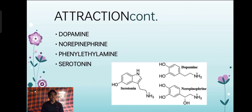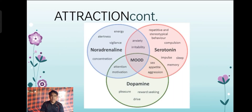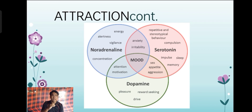The attraction encompasses brain chemicals called monoamines: dopamine, norepinephrine, phenylethylamine, and serotonin — contributors of attraction. There is a Venn diagram in our slides about these brain chemicals and attraction. When we talk about mood, there is noradrenaline, serotonin, and dopamine. These encompass impulse, sleep, sex, appetite, aggression, pleasure, reward-seeking, drive, energy, vigilance, and alertness.